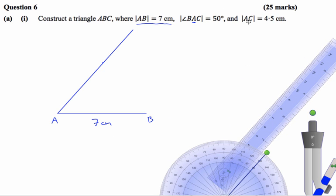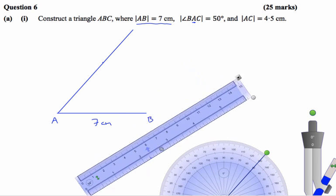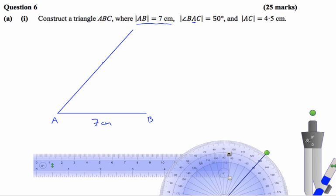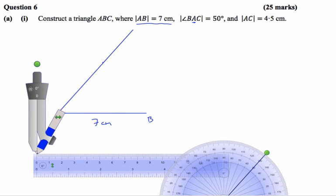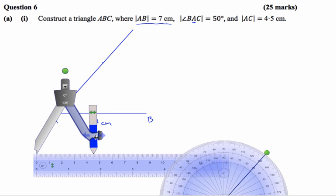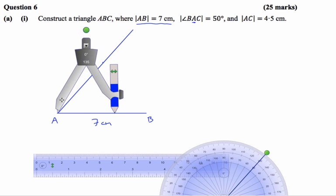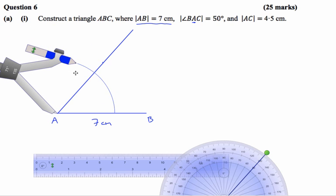It says the line A to C is 4.5cm, so I get my compass and spread it out to 4.5cm. Then I put the point of the compass at A and swing an arc across that line. That's going to be my point C there.